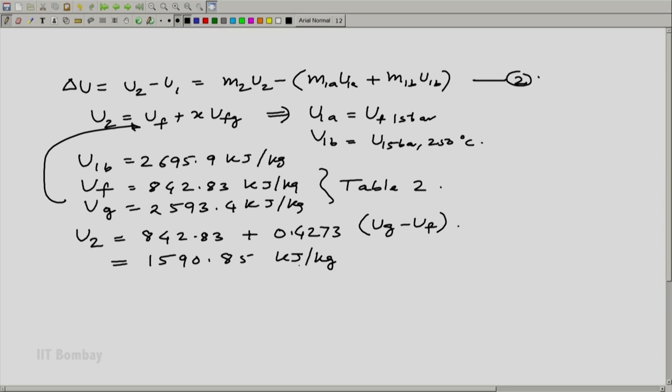Having got these values, now I can get delta u using this equation. I can put these respective values over here and I apply the same way as I did earlier. I can now compute delta u is equal to 33.96 kilojoules.